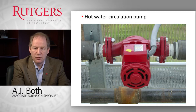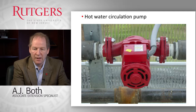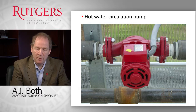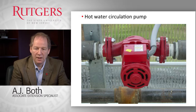This image shows a small circulation pump typically installed in the system to push water around. Depending on the heat requirement of a particular zone, this pump can be engaged and draws hot water from the supply line into the zone, distributing it through the plumbing system to ensure uniform heating throughout the greenhouse.